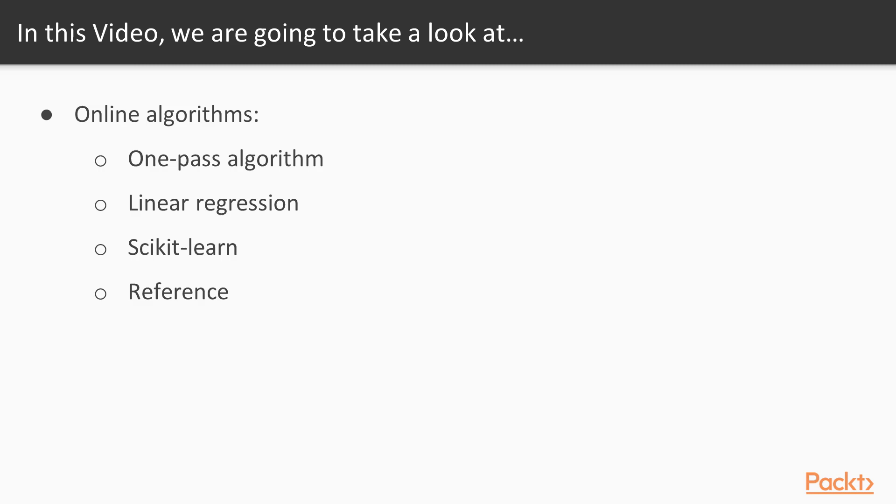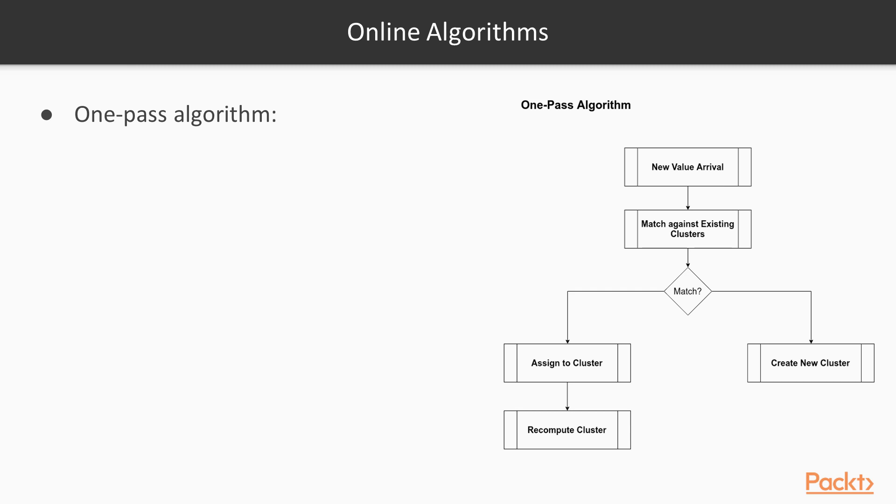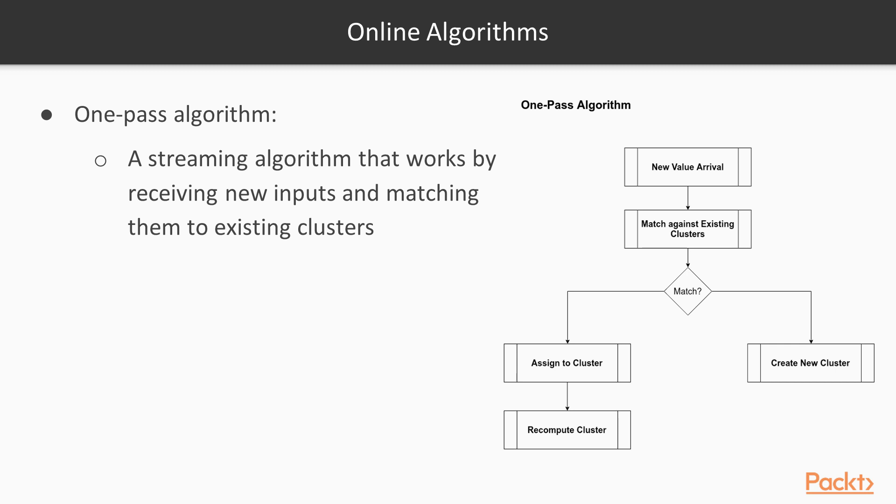Online algorithms, which are sometimes called streaming algorithms, are handy for such tasks that require real-time updates in affordable time. One of the common algorithms in the family of online algorithms is the one-pass algorithm, which is a streaming algorithm that works by receiving new inputs and matching them to existing clusters.